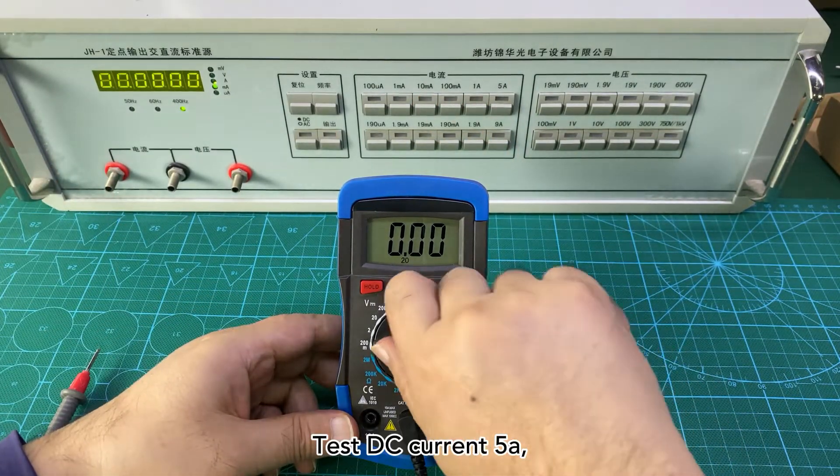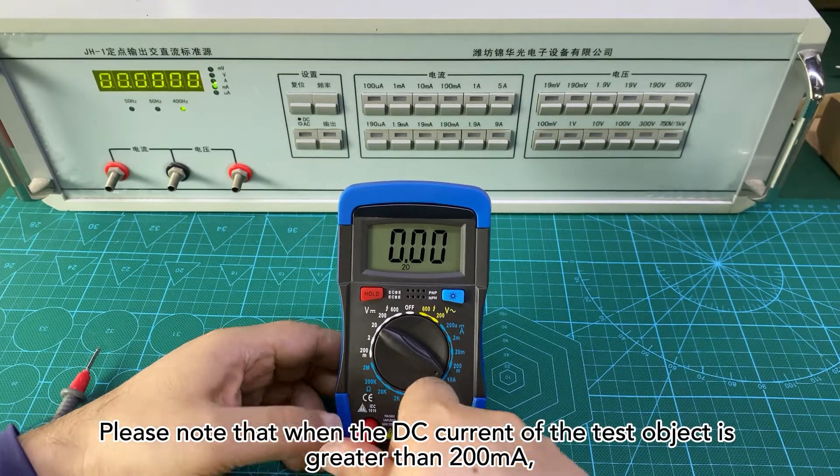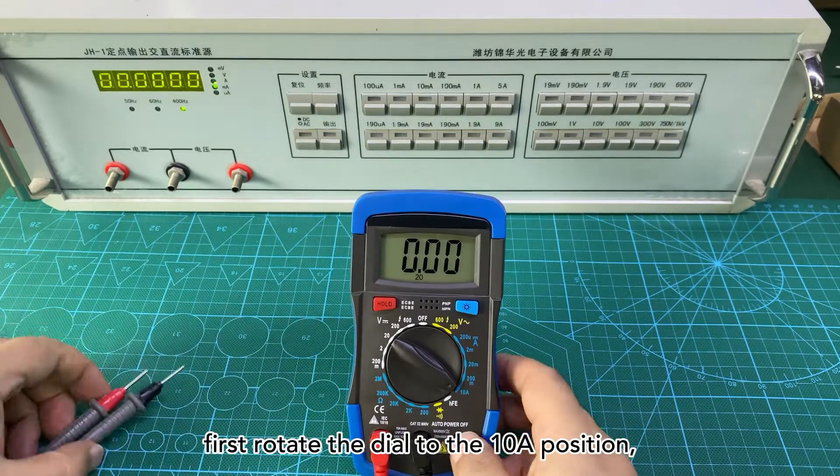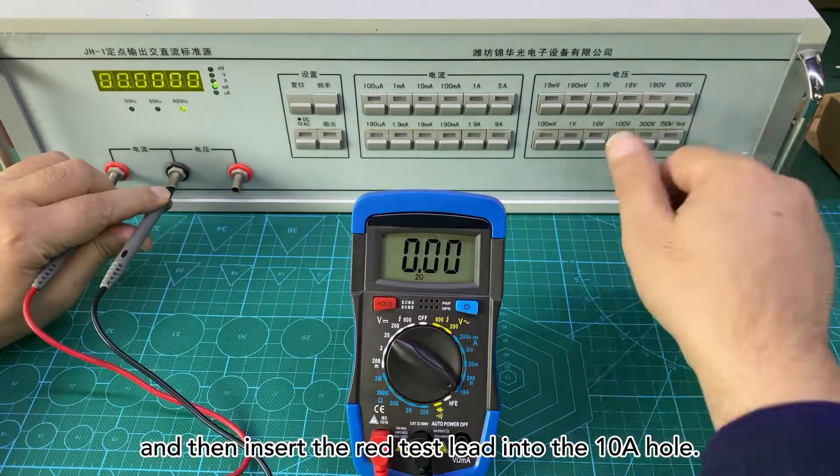Test DC current 5A. Please note that when the DC current of the test object is greater than 200M, first rotate the dial to the 10A position, and then insert the red test lead into the 10A hole.